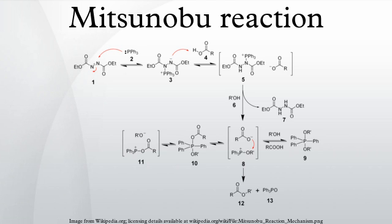Many other functional groups can serve as nucleophiles besides carboxylic acids. For the reaction to be successful, the nucleophile must have a pKa less than 15.